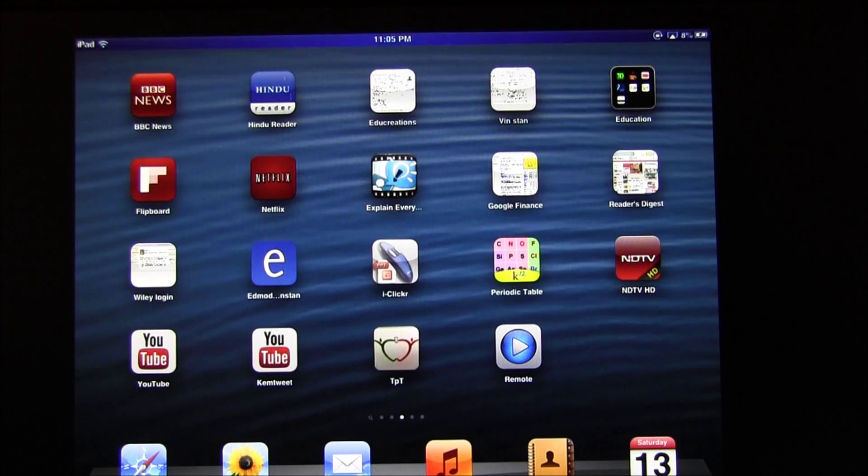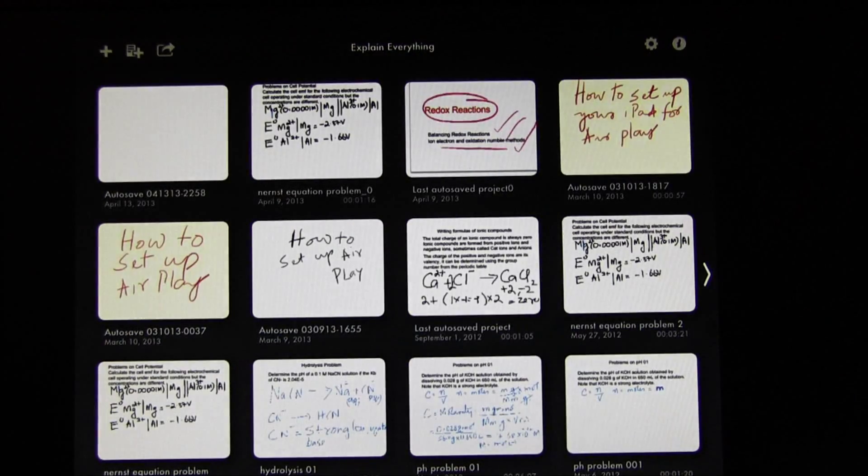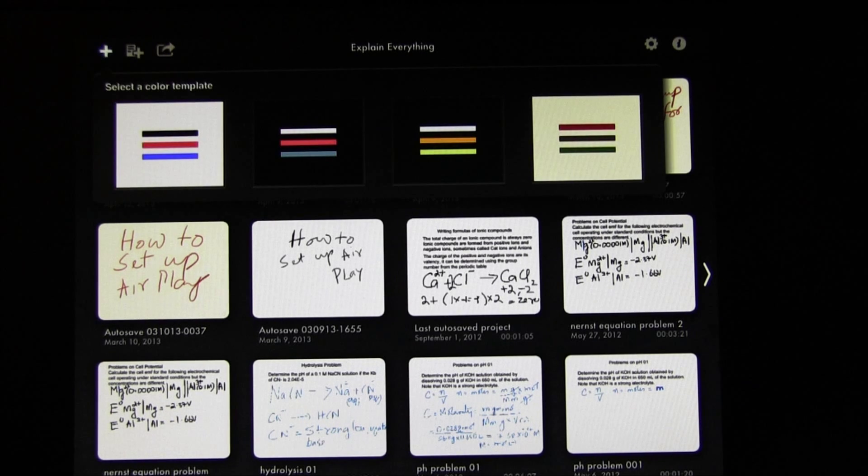The first thing to do is select the app. If you go to the home screen, you will see all the different slides or files that you already have created. Today we're going to create a new document, so I'm going to select the plus sign which indicates a new document. We have to select a color template. I'm going with the first one. And I have a slide here.